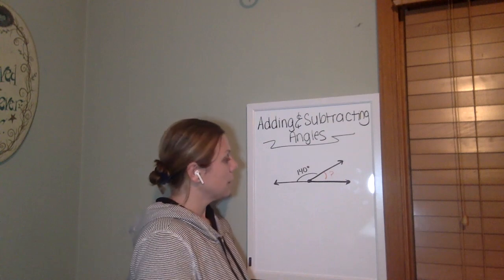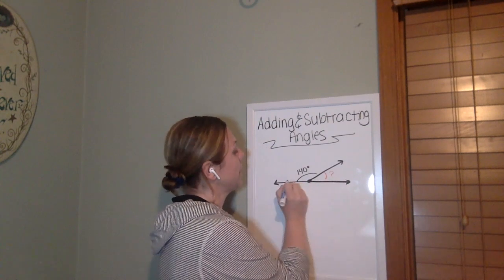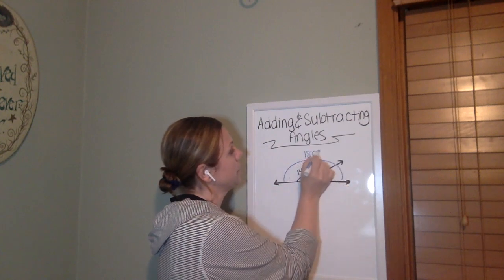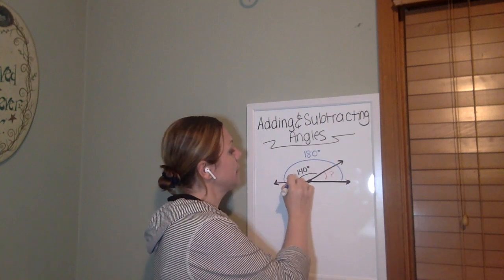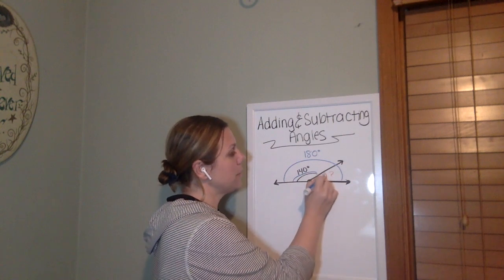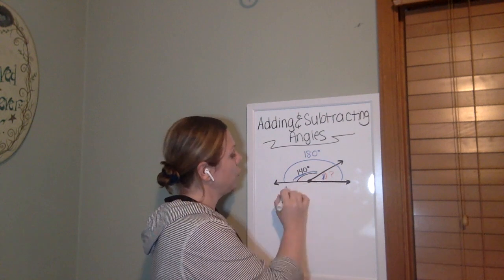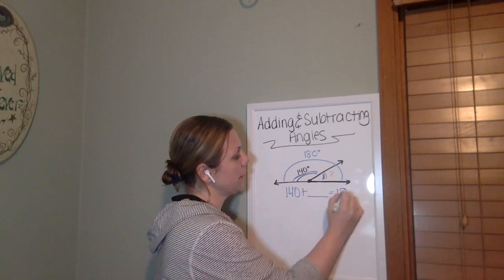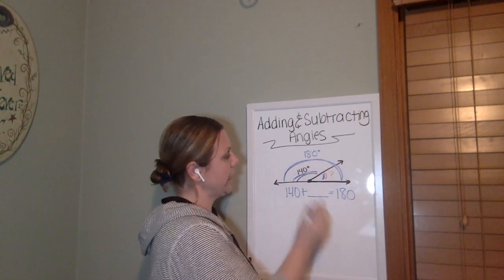So as you might remember, a straight angle, which is this straight line right here, this whole thing is 180 degrees. Since you know that, and we know that this is 140 degrees, we could easily figure out this missing part right here by thinking of it as 140 plus what equals 180? Because we know that this whole thing has to be 180.